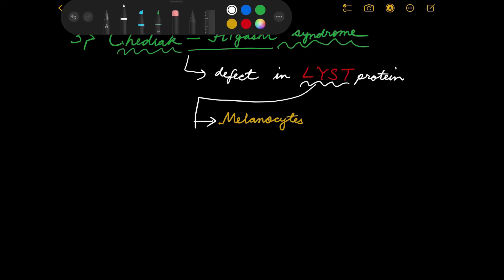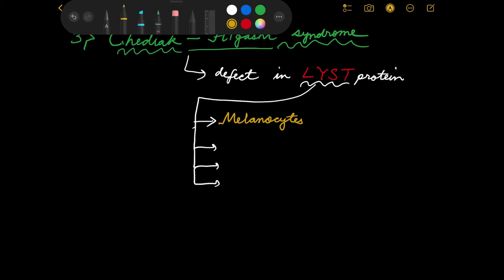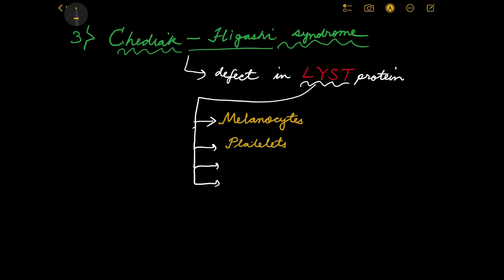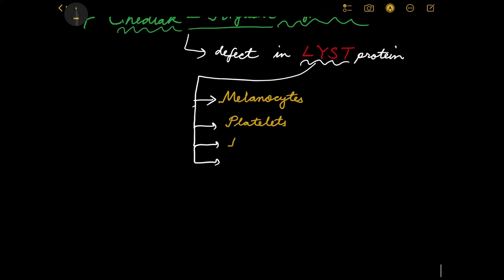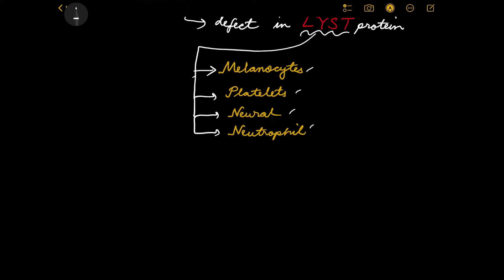LYST protein is also very much needed in platelets, in neural tissue, and obviously in neutrophils as well — that last point being the entire basis of the previous discussion. So if there is a defect in LYST protein, all of these cell types will be affected.